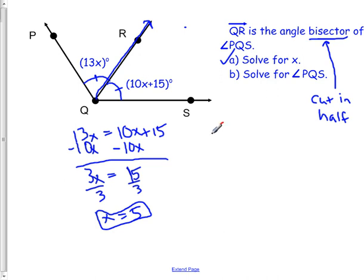So angle PQS, what we're going to do is figure out both of these and then add them together. So if we go 13 times 5, that's going to be PQR. 13 times 5, that's going to be 65 degrees. And so this one's 65.